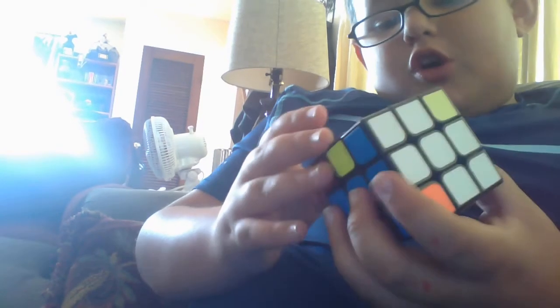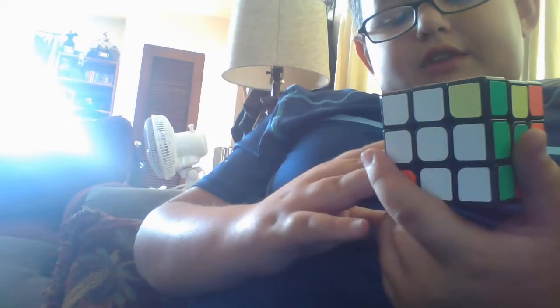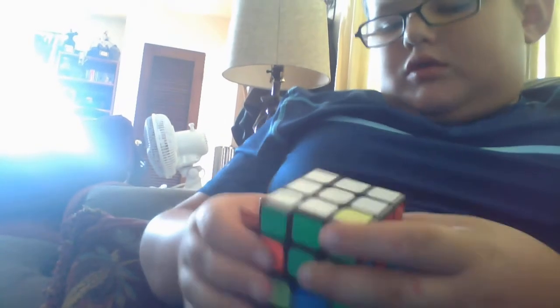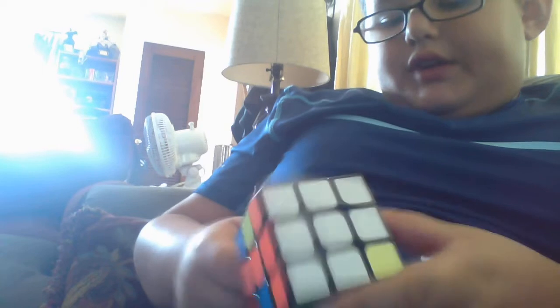And those corners are the blue, orange, and white, and the green, red, and white. So, I need to find the blue and orange side. And then, find the other corner. Oh! So, and as you can see, we have solved the whole bottom layer.